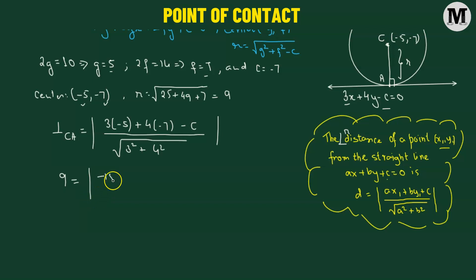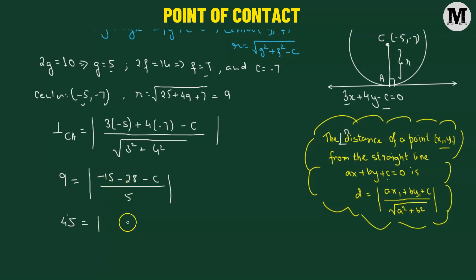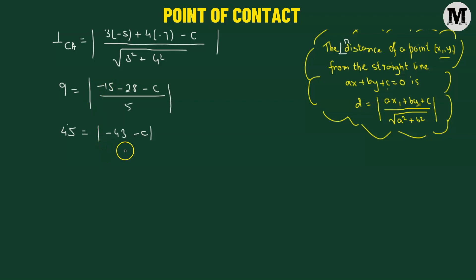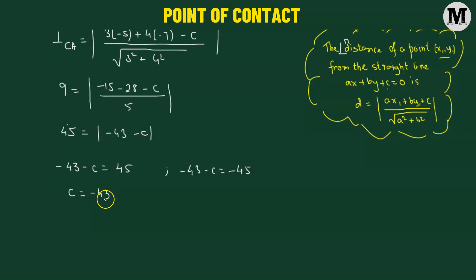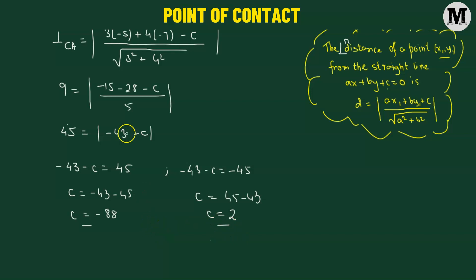Setting up the equation: 9 equals the absolute value of (3 times negative 5 plus 4 times negative 7 minus c) divided by 5, which gives 45 equals the absolute value of (negative 43 minus c). This yields two equations: negative 43 minus c equals 45, giving c equals negative 88; and negative 43 minus c equals negative 45, giving c equals 2.